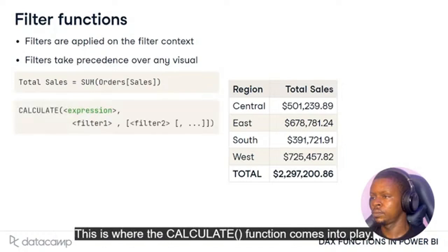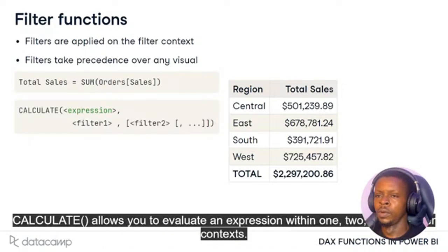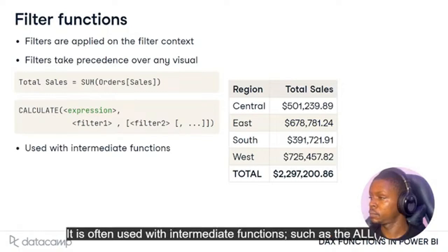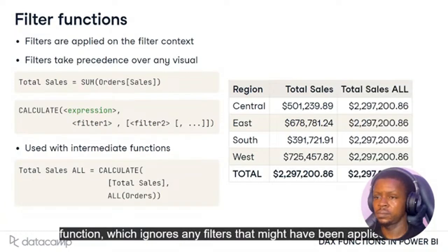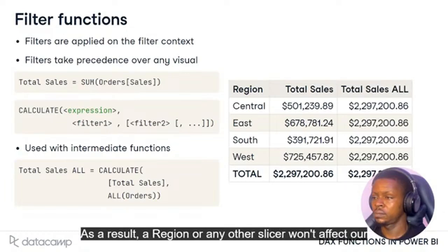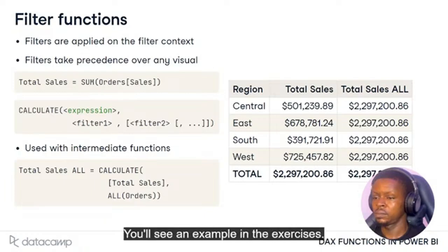This is where the CALCULATE function comes into play. CALCULATE allows you to evaluate an expression within one, two, or more filter contexts. It is often used with intermediate functions such as the ALL function, which ignores any filters that might have been applied. As a result, a region or any other slicer won't affect our calculation, which is what we want for our summary card in this case. You'll see an example in the exercises.